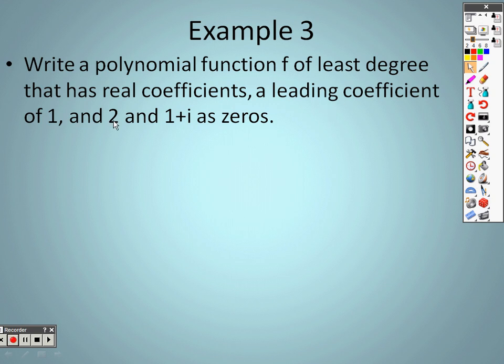So these are the zeros. This is actually easier than it looks. Basically, complex numbers come in pairs. You need to remember that when you're doing this.